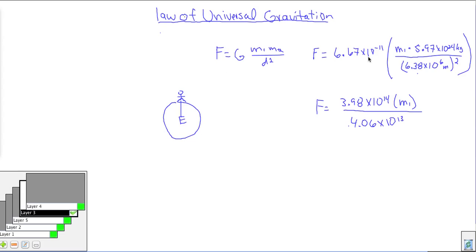we know is 6.67 times 10 to the negative 11th times the mass of one object times the mass of another object divided by the distance between them squared. So if you're a person standing on the face of the